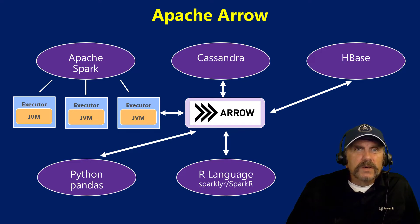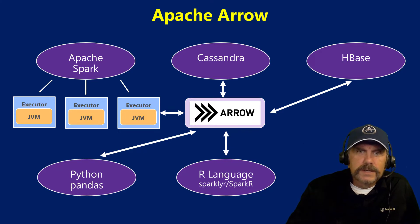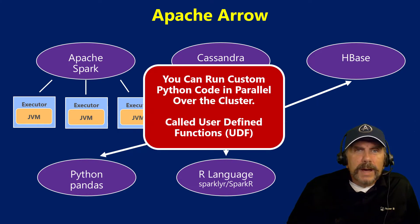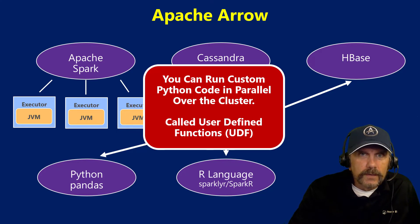A nice thing about this is that Arrow just transparently replaces these other formats behind the scenes, and you don't really have to worry about it. So it's a really nice feature. The bottom line of all this is you can now run custom Python code in parallel over the cluster performantly — it's going to do just fine.